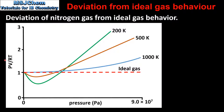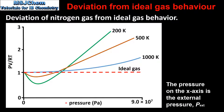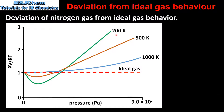In this graph, on the y axis we have the product of PV over RT, and on the x axis we have pressure. From the graph we can see that for an ideal gas the product of PV over RT is equal to 1 at all pressures. The three curves on the graph show the deviation of nitrogen from ideal behavior at three different temperatures. The greatest deviation from ideal behavior occurs at 200 Kelvin, telling us that real gases deviate the most from ideal gas behavior at high pressures and low temperatures.